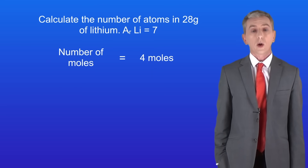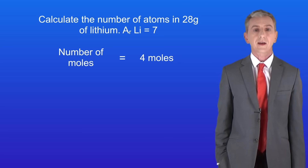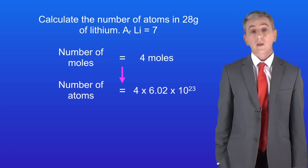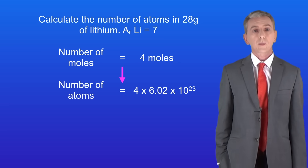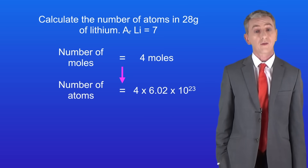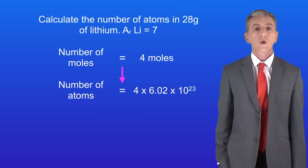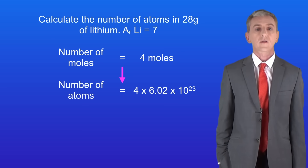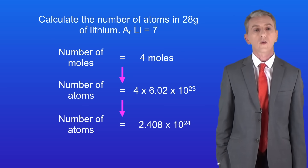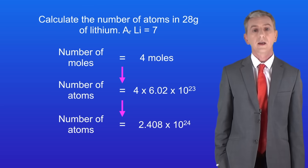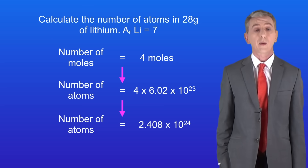Remember that one mole contains Avogadro's constant of atoms. So to calculate the number of atoms we multiply 6.02 times 10 to the power of 23 by 4, which gives us a final answer of 2.408 times 10 to the power of 24 atoms.